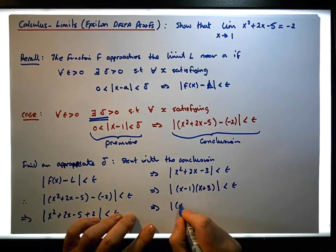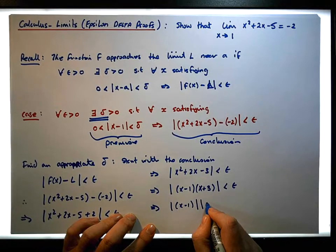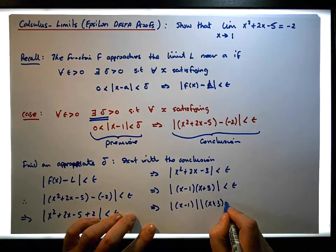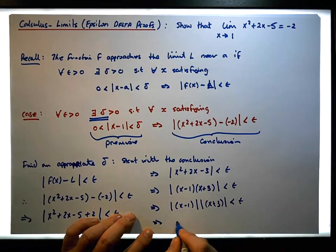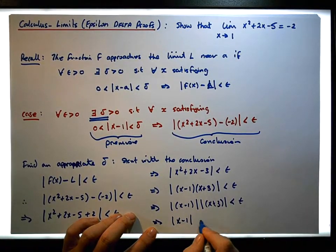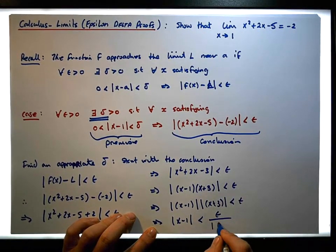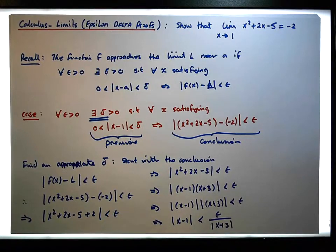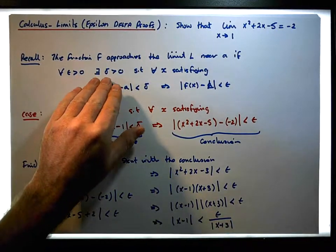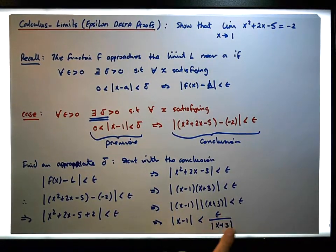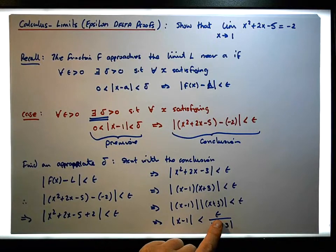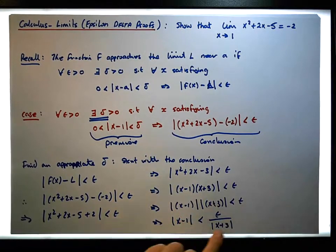The absolute value of x minus 1 times the absolute value of x plus 3 must be less than epsilon, which implies that the absolute value of x minus 1 must be less than epsilon over the absolute value of x plus 3. We could choose this as our delta, but what we want is a delta specified only in terms of epsilon. So we need to find an upper bound on x minus 1 that doesn't involve x plus 3.